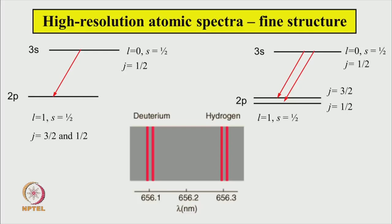In the last lecture, I showed you the fine structure of the spectrum of the hydrogen atom and deuterium atom, where 3s and 2p were connected by only one transition. Now, for the 3s state l equals 0 and spin s is half, together giving a total angular momentum of j equal to half. Similarly, for the 2p state l equals 1 and s equals half, these two angular momenta combine to give values of j equal to 3/2 and 1/2.